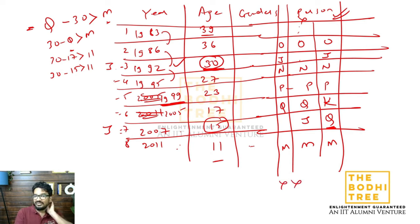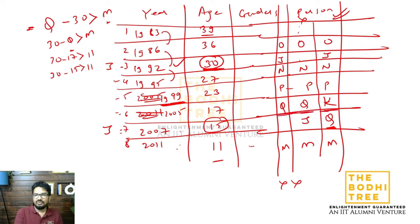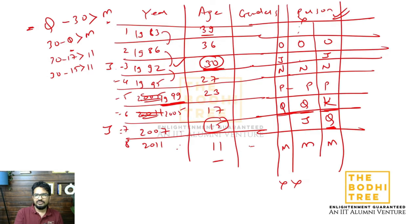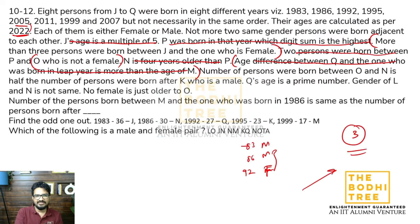O and N ke beech mein ek banda hai - that is half the number of persons born after K. K ke baad 2 chahiye toh Q hai yahan par. K ke liye jagah milti hai toh sabka ho gaya: O, J, N, P, K, Q, M. Ek banda bachta hai - L. 8 persons hain: J, K, L, M, N, O, P, Q. Toh L yahan par aa gaya.